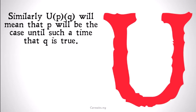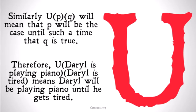Similarly, UPQ will mean that P will be the case until such a time that Q is true. This is a future analog to since. So for example, U(Daryl is playing piano, Daryl is tired) means that Daryl will be playing piano until he gets tired.